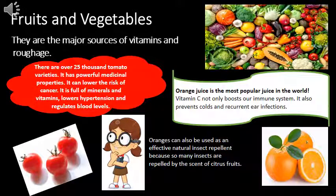Fruits and vegetables are sources of vitamins and roughage. Children, do you know what is roughage? Roughage is indigestible material in food. It helps our body to get rid of undigested food.